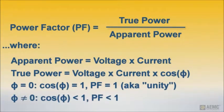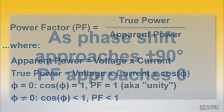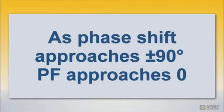However, when phase shift is non-zero, its cosine is less than 1. This results in true power falling below apparent power, and consequently a power factor less than 1. As the absolute value of phase shift increases, power factor decreases.